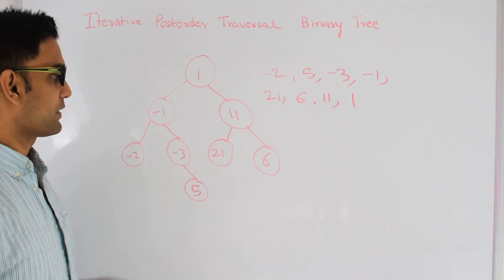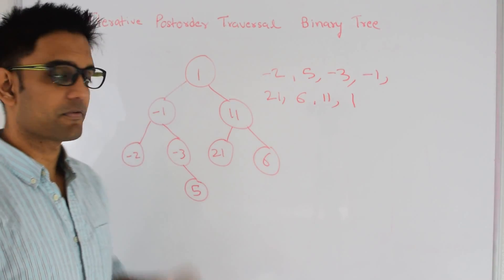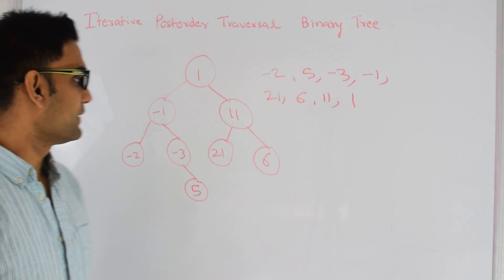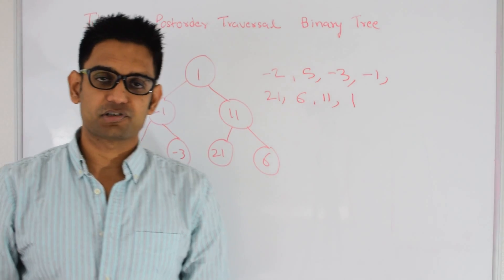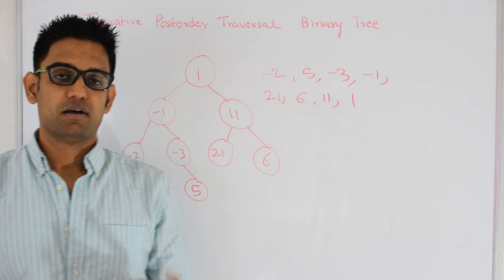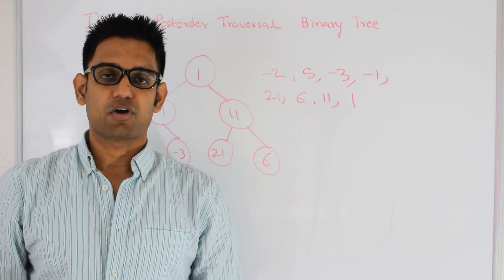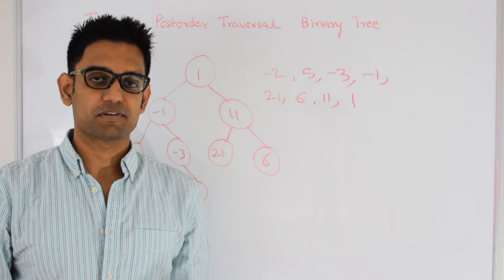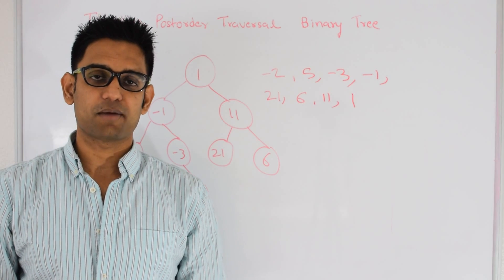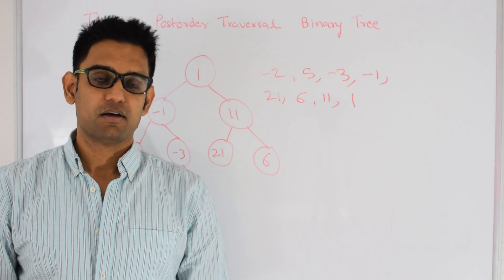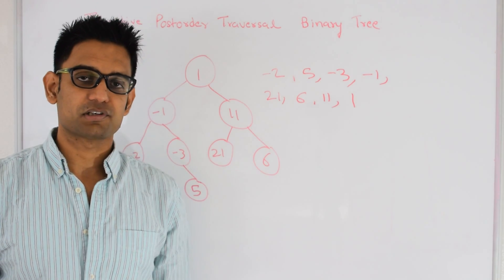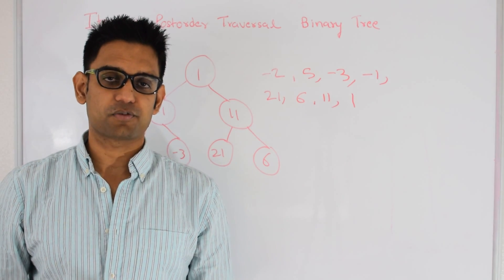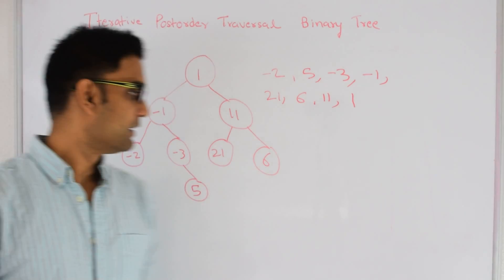So this is the post-order traversal of this tree. In the recursive version, the program's call stack takes care of most of the things and the program is very simple. For the iterative version we'll have to use 2 stacks to solve this problem.